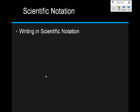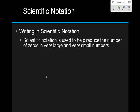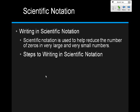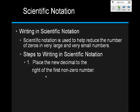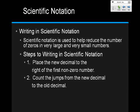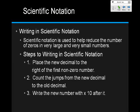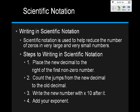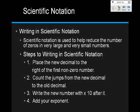Now let's look at scientific notation — this should all be review from physical science. We use scientific notation to help reduce the number of zeros in very large or very small numbers. The steps: number one, place the new decimal to the right of the first non-zero number. Step two, count the jumps from the new decimal to the old decimal. Step three, write the new number with times 10 after it. Step four, add your exponent — because each decimal jump is always by a power of 10.